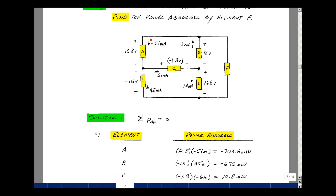For element A, I have the current entering the plus terminal coming out to minus, so the power absorbed is 13.8 times minus 51 milliamps, and that's a minus 703.8 milliwatts.